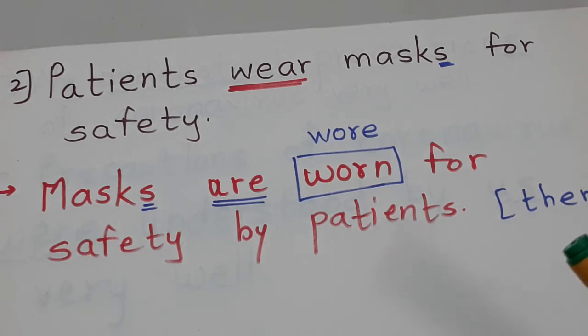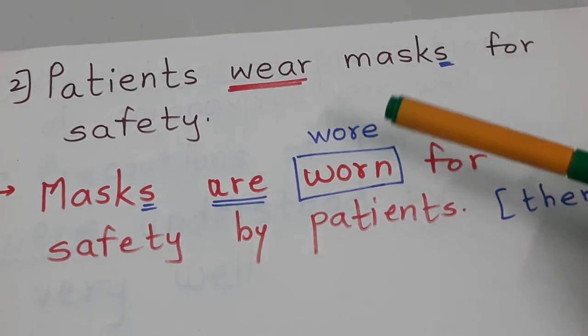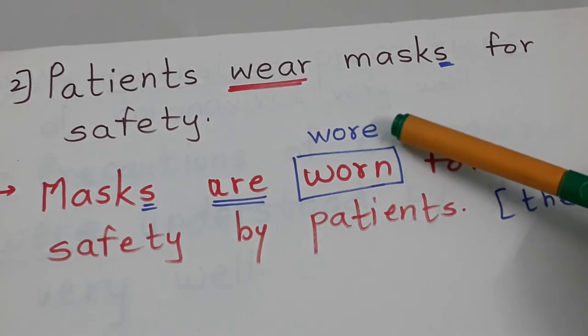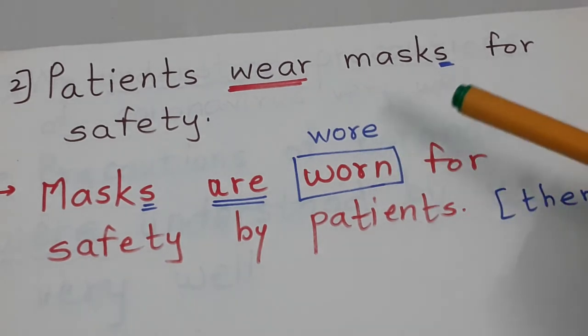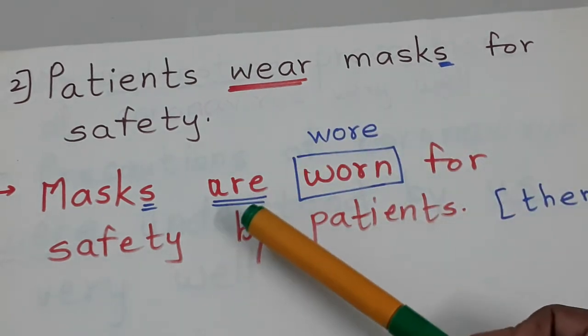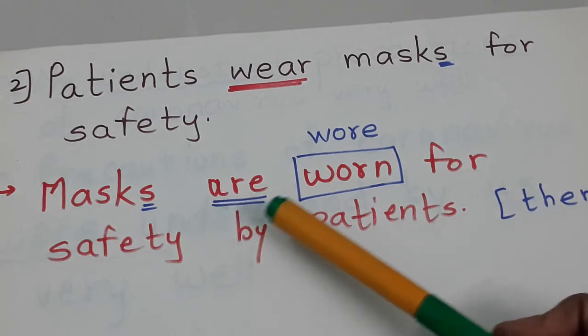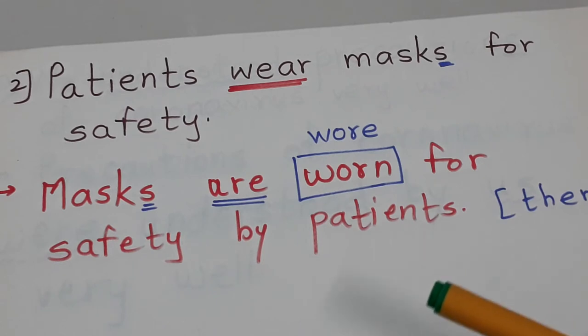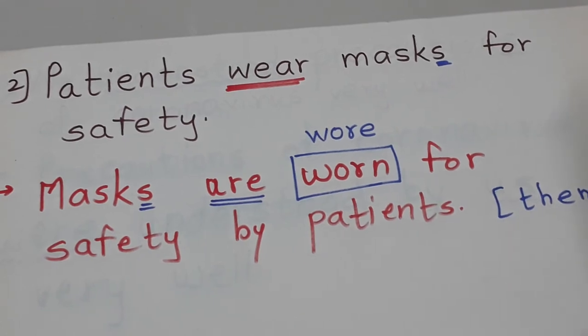Second sentence: Patients wear mask for safety. Now wear is the verb. Its three forms should be known: wear, past tense wore, and worn. Now here it's not mask, it's masks in plural. So the answer becomes: Masks are worn for safety by patients.